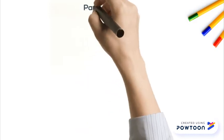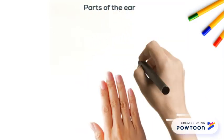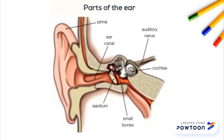Here is a picture of the ear. The sound goes to the pinna, ear canal, eardrum, small bones, cochlea, and finally the auditory nerve.